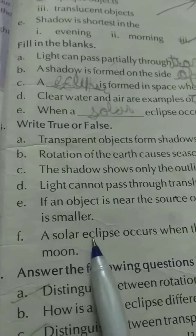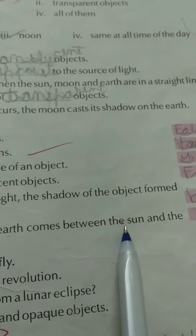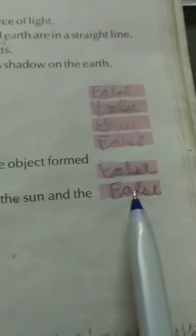Part F: A solar eclipse occurs when the earth comes between the sun and the moon. It is false. Question answers.